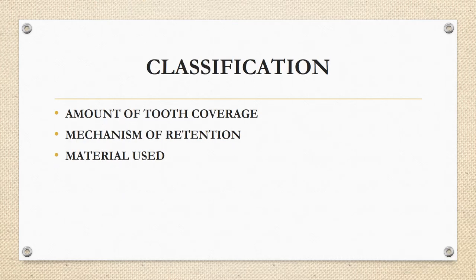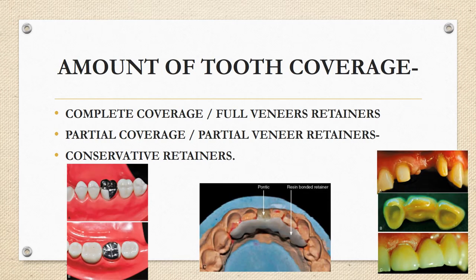Retainers are classified in three ways: first by amount of tooth coverage, second by mechanism of retention, and third by the materials used. The first classification — amount of tooth coverage — is divided into three types: complete coverage, partial coverage, and conservative retainers.